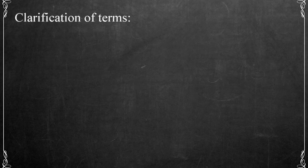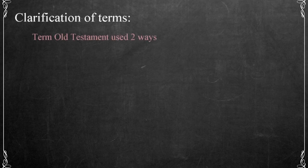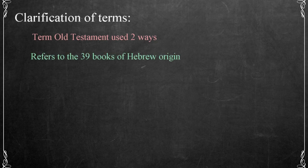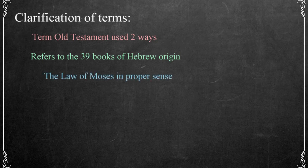First, we need to clarify the term Old Testament to eliminate any confusion you might experience when discussing the Bible. The term Old Testament can be used in two ways. The first is as a descriptive term referring to the 39 books of Hebrew origin known collectively as the Old Testament. A second use of the term is as a reference to the Law of Moses — the Law, consisting of the Ten Commandments, as well as a number of statutes and ordinances.